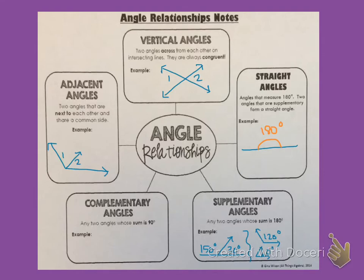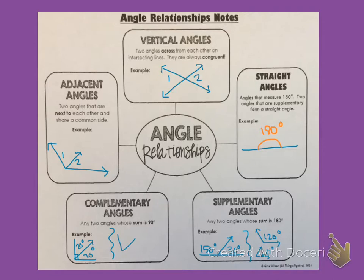Complementary angles are any two angles whose sum is 90 degrees. We can see this in one of two ways. We can see this where those two angles are adjacent, meaning they are right next to each other and they share a common side. When complementary angles are adjacent to each other, they form a corner. But sometimes we'll see two complementary angles that are not adjacent and do not share a common side, but their sum still equals 90.